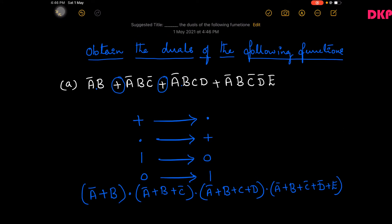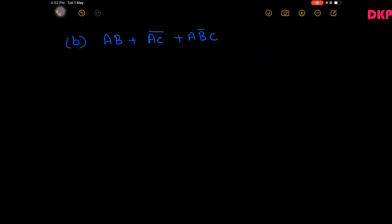This is the dual of the given function. Let us move on to the next example: ab + ac̄ + ab̄c. The first variable is written as it is — a — then AND is changed to OR giving b; OR is changed to AND giving a; AND is changed to OR giving c̄. The dual is (a+b)·(a+c̄)·(a+b̄+c).